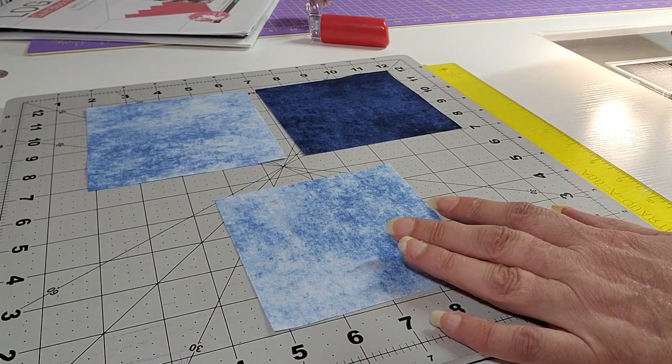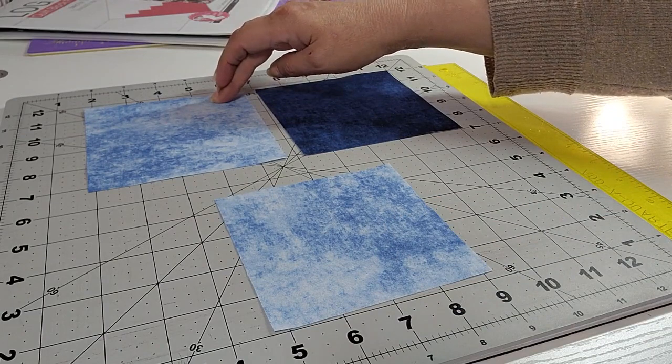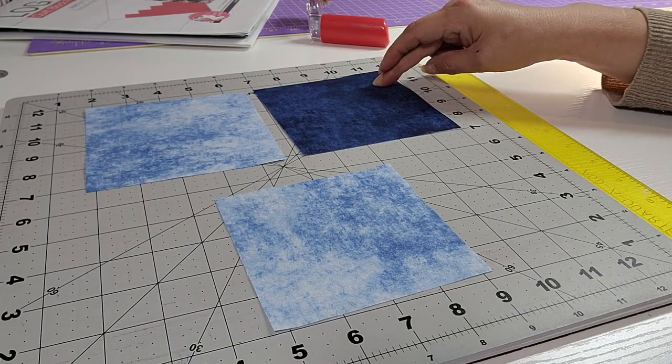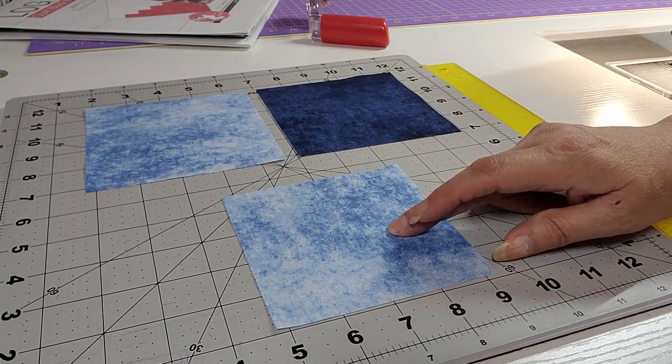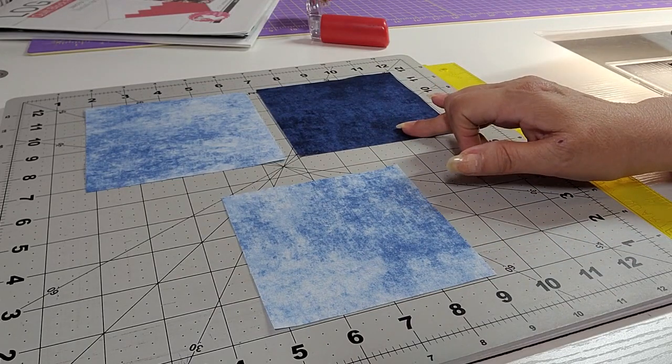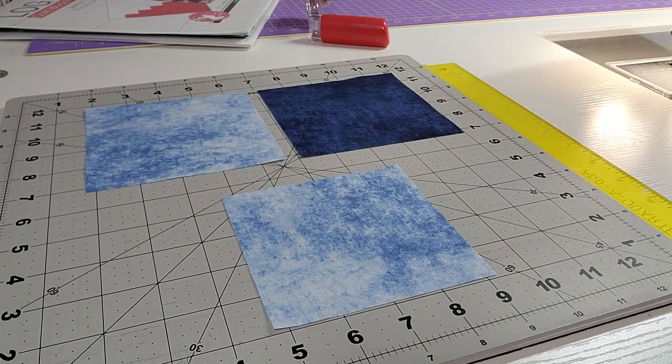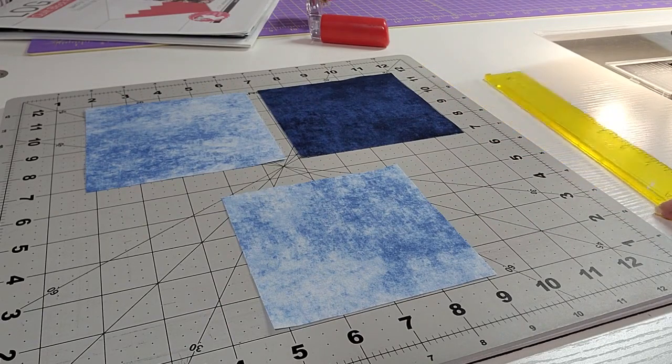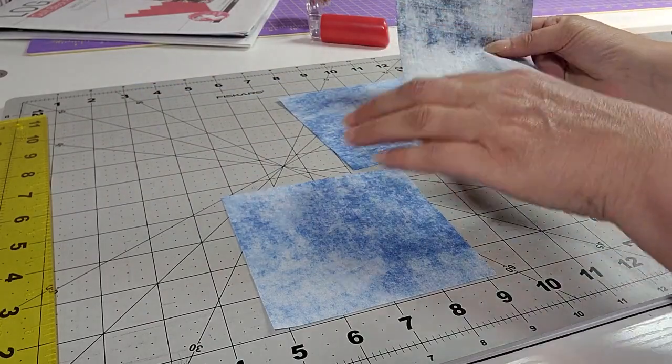You're going to need to cut two light four and seven-eighths inches, two dark four and seven-eighths inches, two light four and a half inches, and three dark four and a half inches. I'll be putting that in a PDF file in our group.